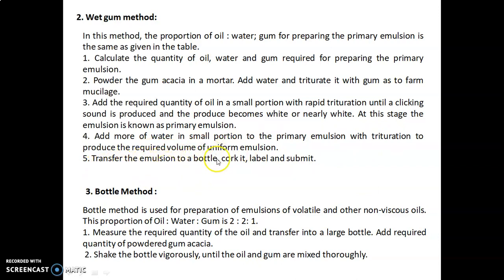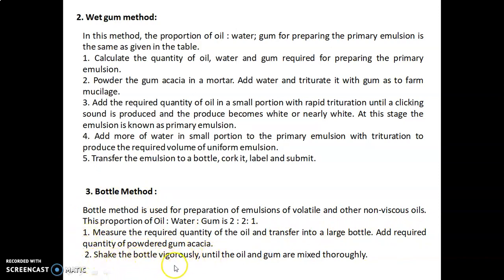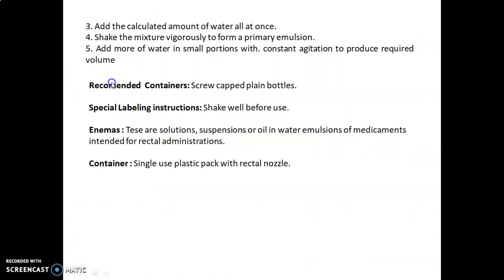Transfer the emulsion to a bottle, cork it, label, and submit. The third method is the bottle method, used for preparation of emulsions of volatile and other non-viscous oils. The proportion of oil to water to gum is 2:2:1. Measure the required quantity of oil and transfer into a large bottle, add the required quantity of powdered gum acacia, then shake the bottle vigorously until oil and gum are mixed thoroughly. Add the calculated amount of water all at once, then shake vigorously to form a primary emulsion. Add more water in small portions with constant agitation to produce the required volume.